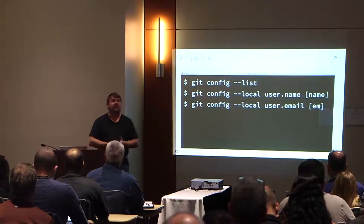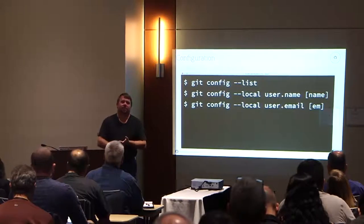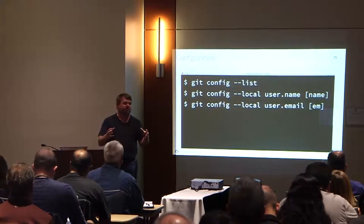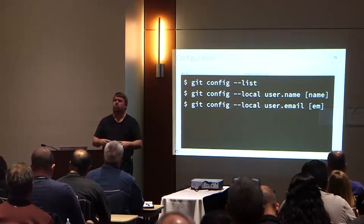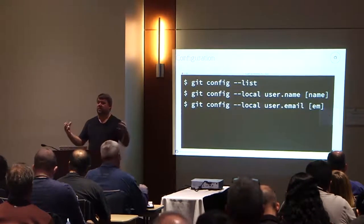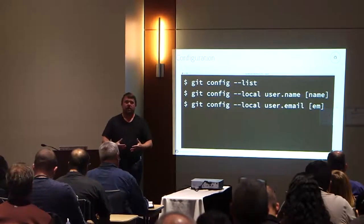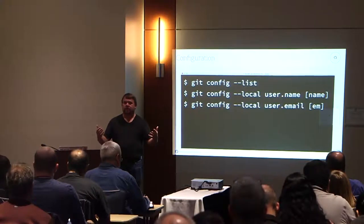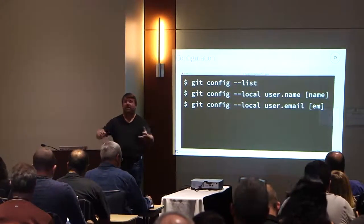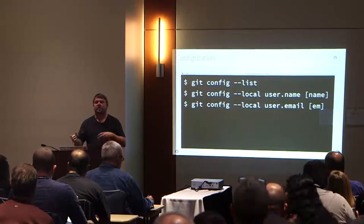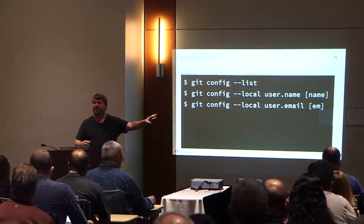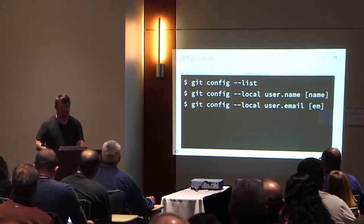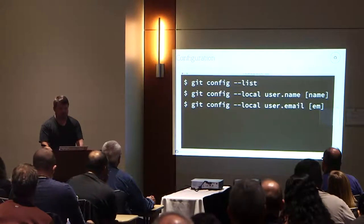The command we use is 'git config', and it runs at three different levels. There is the system level — your machine itself — a global level, which is sort of like your global identity, and then a local identity. Your company's global identity would be where you work day to day, making it easy for commits. If you do 'git config --list', it'll show you all of your config options.